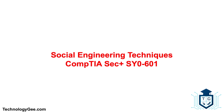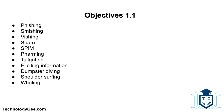What's up everybody, this is your boy Tech G back with another video to help you successfully pass the CompTIA Security Plus SY0-601 certification. In this video you're going to learn about social engineering techniques such as phishing, smishing, vishing, spam, SPIM, spear phishing, pharming, tailgating, eliciting information, dumpster diving, shoulder surfing, and whaling.